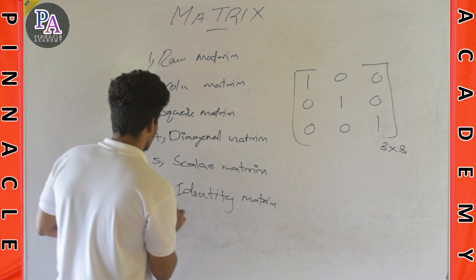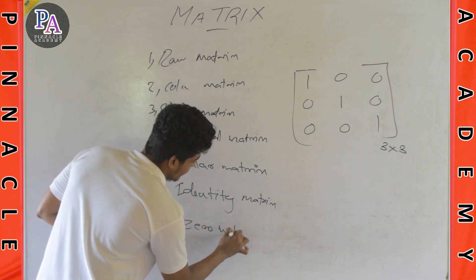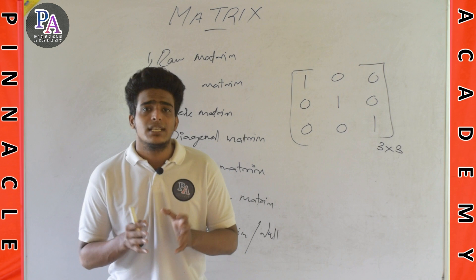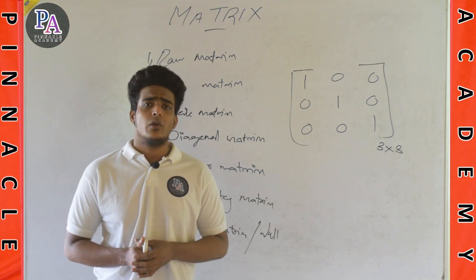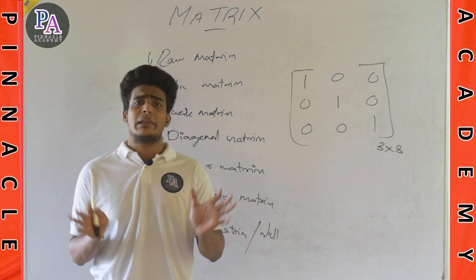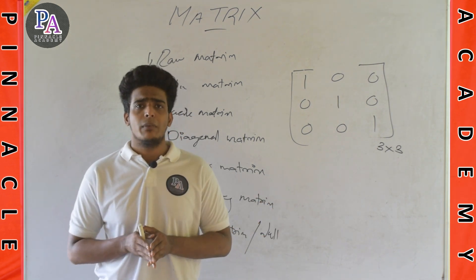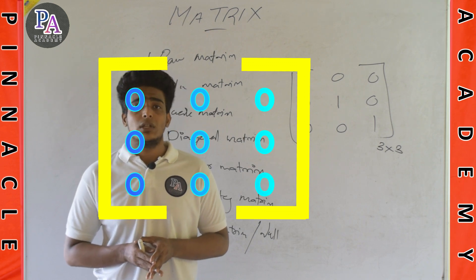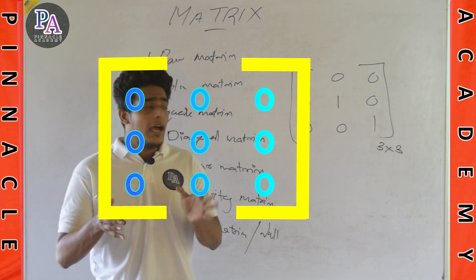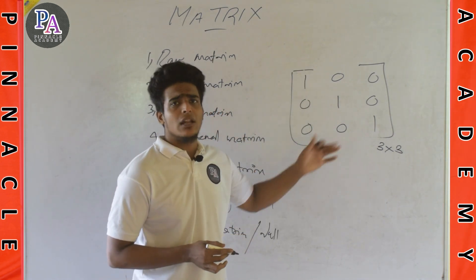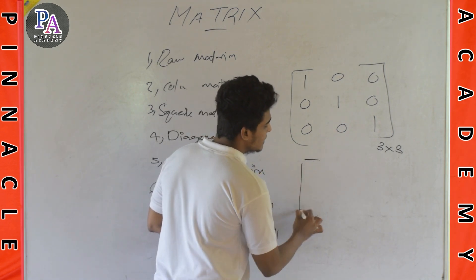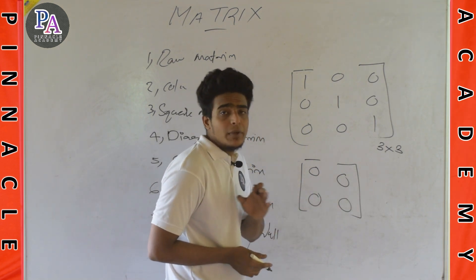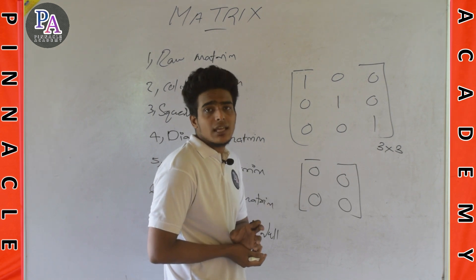The last one is zero matrix, also called null matrix. All elements are 0. In the case of a zero matrix, we have a matrix where all elements are 0. It is called zero matrix or null matrix.